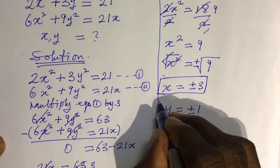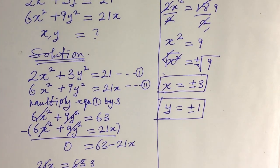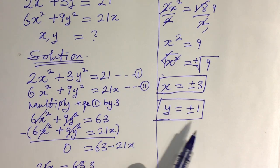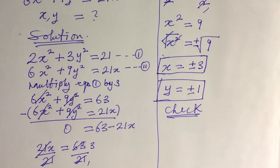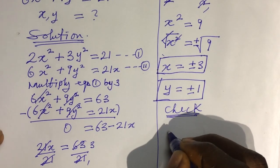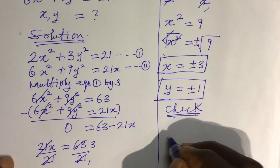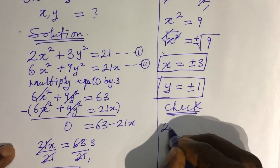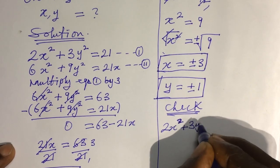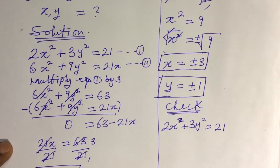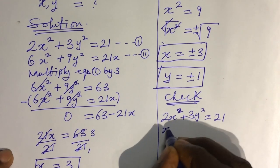To verify, you can pick any of the roots and substitute into Equation 1 or 2 to confirm they satisfy the equation. Let's check using x = −3 and y = −1 in Equation 1: 2x² + 3y² = 21.